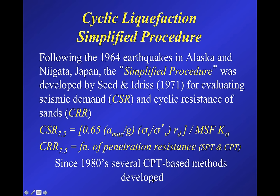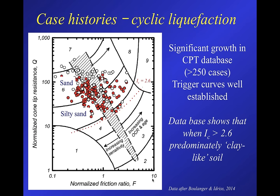Since the 1980s several CPT-based methods have been developed, and the software has the major ones embedded so you can compare them. We now have over 250 case histories, and with the Christchurch earthquakes five years ago the number has grown massively. The trigger curves are very well established. A plot from Boulanger and Idriss shows the red dots — sites where liquefaction occurred — mostly in the sandy region of the CPT normalized soil behavior type chart, with essentially no case histories having an IC greater than 2.6.